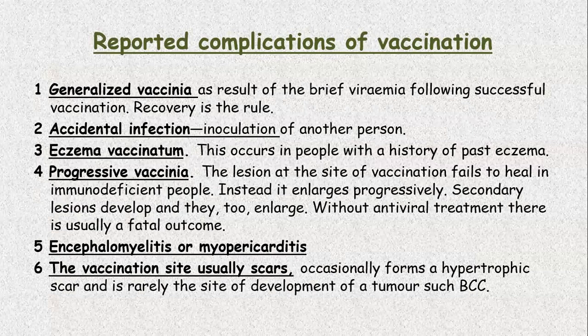Reported complications of vaccination. Generalized vaccinia as a result of brief viremia following successful vaccination — recovery is the rule. Accidental infection and inoculation to another person. Eczema vaccinatum — this occurs in people with a history of past eczema. Progressive vaccinia — the lesion at the site of vaccination fails to heal in immunodeficient people; instead it enlarges progressively, secondary lesions develop and they too enlarge; without antiviral treatment there is usually a fatal outcome. Encephalomyelitis and myopericarditis. The vaccination site usually scars, occasionally forms a hypertrophic scar, and rarely is the site of development of a tumor such as basal cell carcinoma.